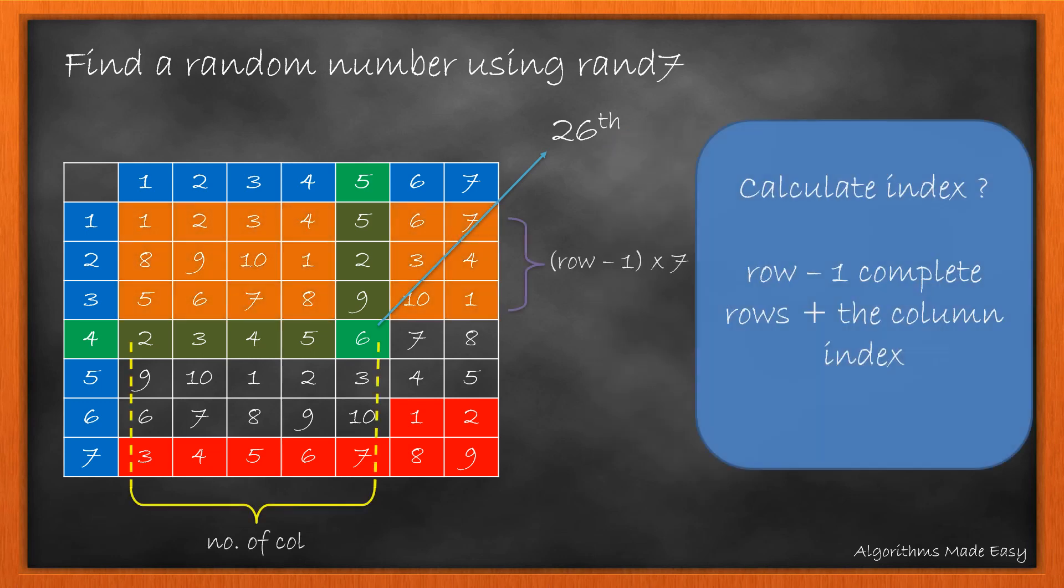The index we need is for number 6 highlighted. How do we calculate the index? If we see manually we know it is at index 26. That is it is the 26th tile. But how do we calculate it programmatically?